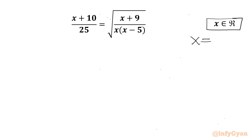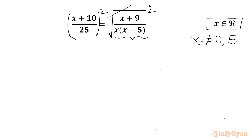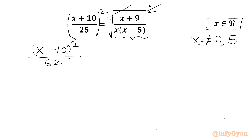Our answer cannot be 0 and our answer cannot be 5, from our denominators. Now I will square both sides — the square root and square will cancel — so (x + 10)² over 625 equals (x + 9) divided by x times (x minus 5).